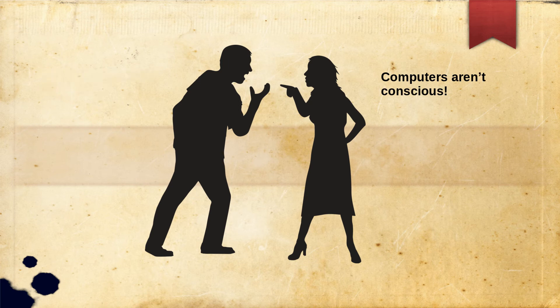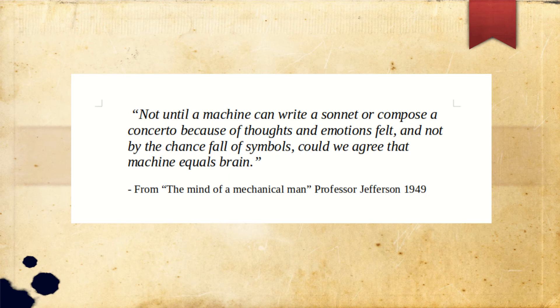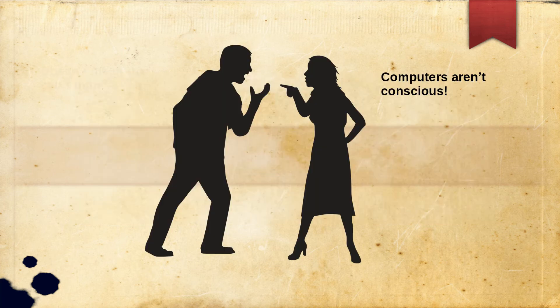Objection 4: Consciousness. Turing quotes Professor Jefferson's paper, The Mind of a Mechanical Man, in which he says: not until a machine can write a sonnet or compose a concerto because of thoughts and emotions felt, and not by the chance fall of symbols, could we agree that machine equals brain. Turing argues this objection ignores the question of his paper — can computers think? Although computers may not be able to feel emotions, it doesn't mean they cannot think, or at least be indistinguishable from a thinking human.